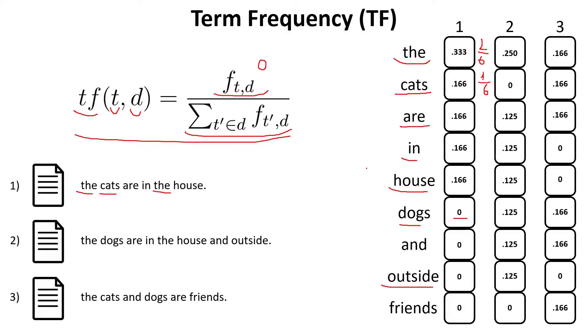So, after we compute the term frequency, we obtain three vectors, one for each document, which represents how often a word in our corpus is found inside that document divided by the total numbers of words inside that document.